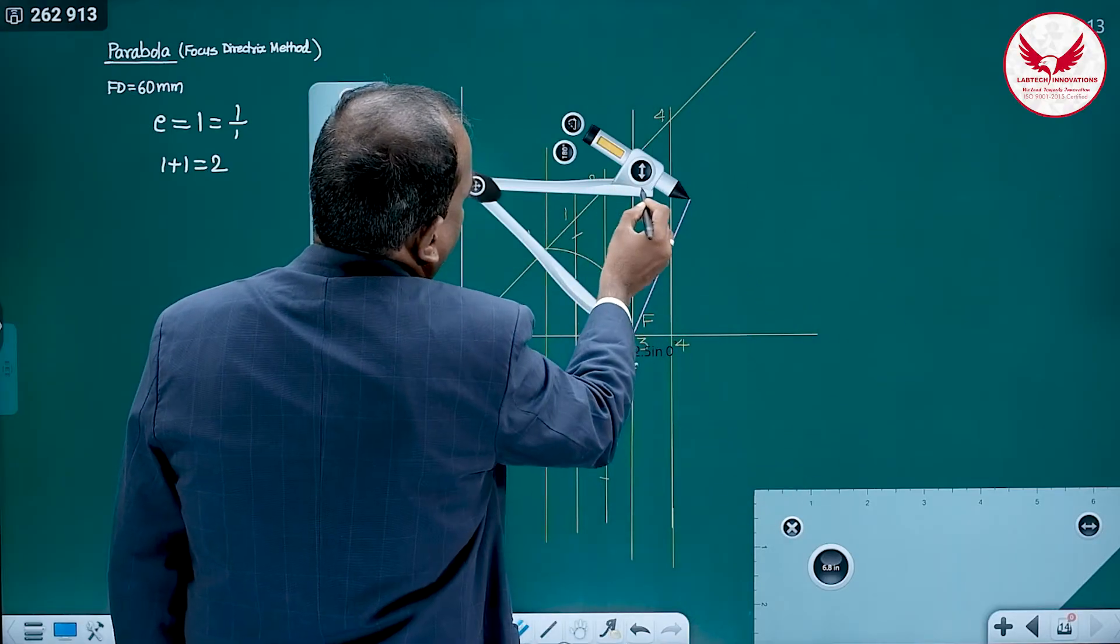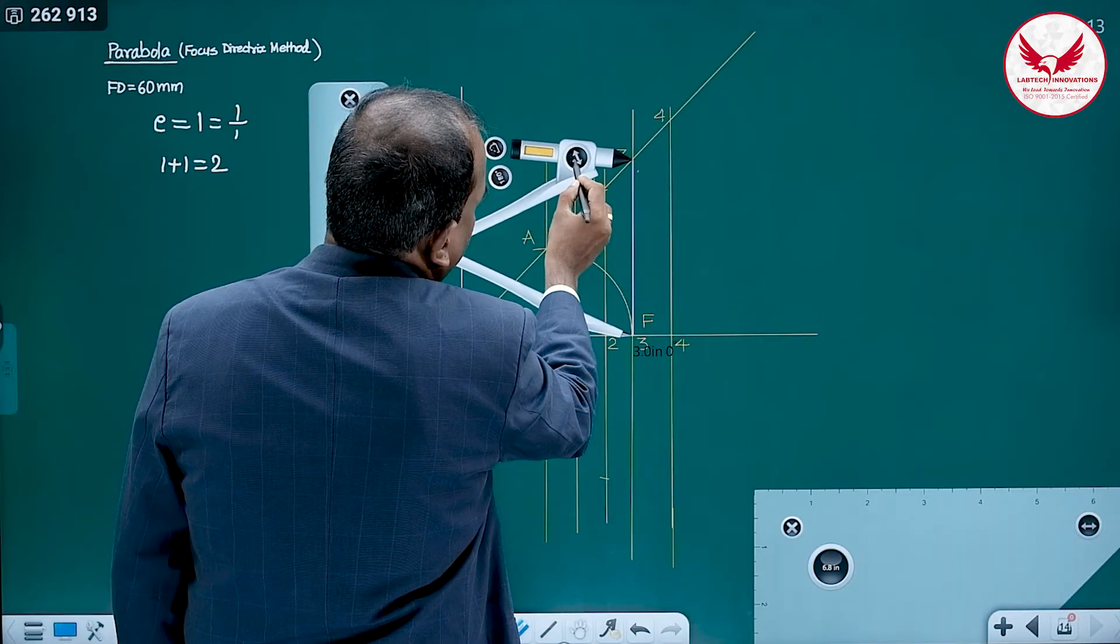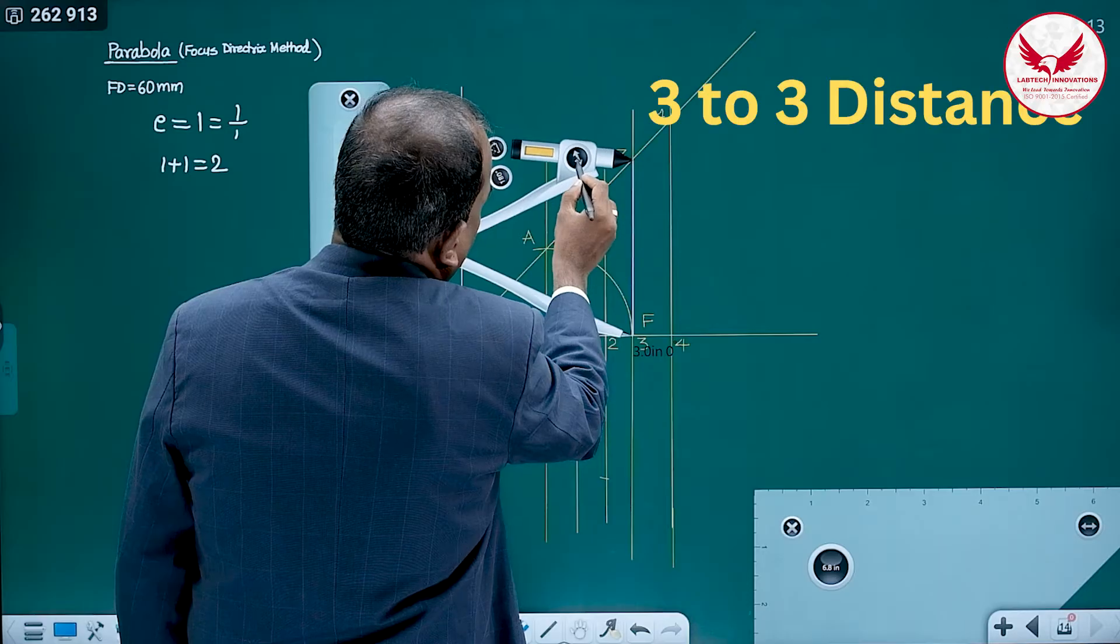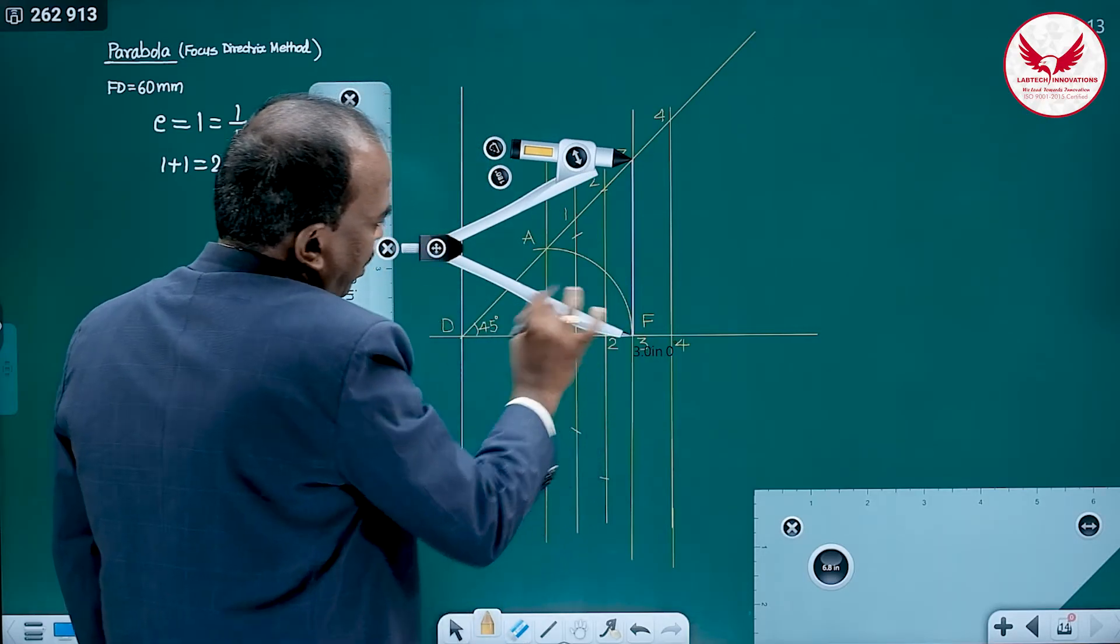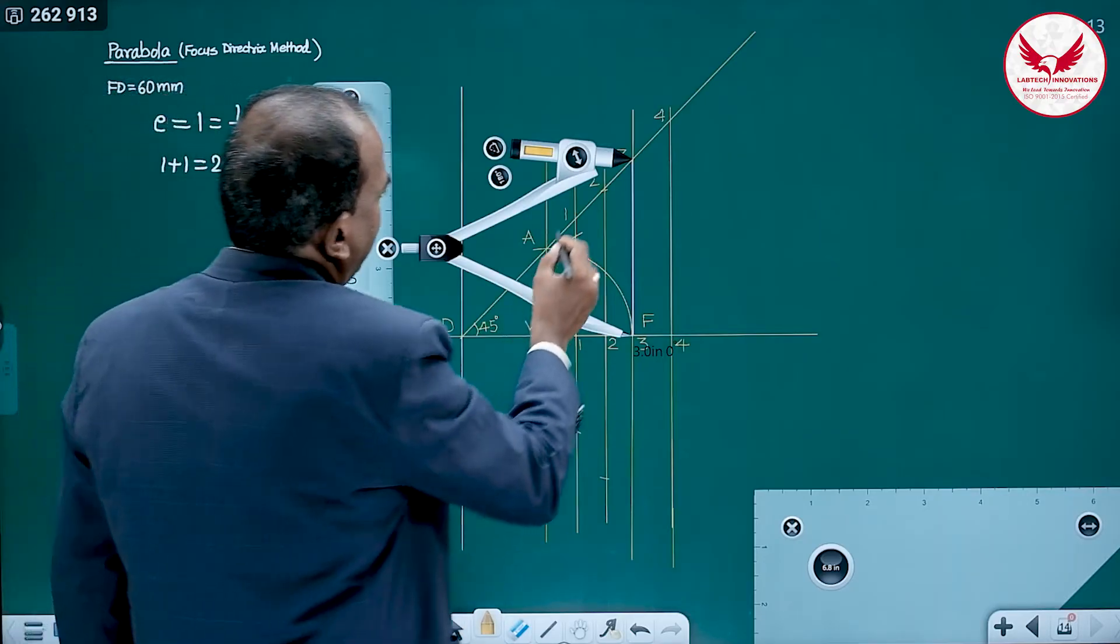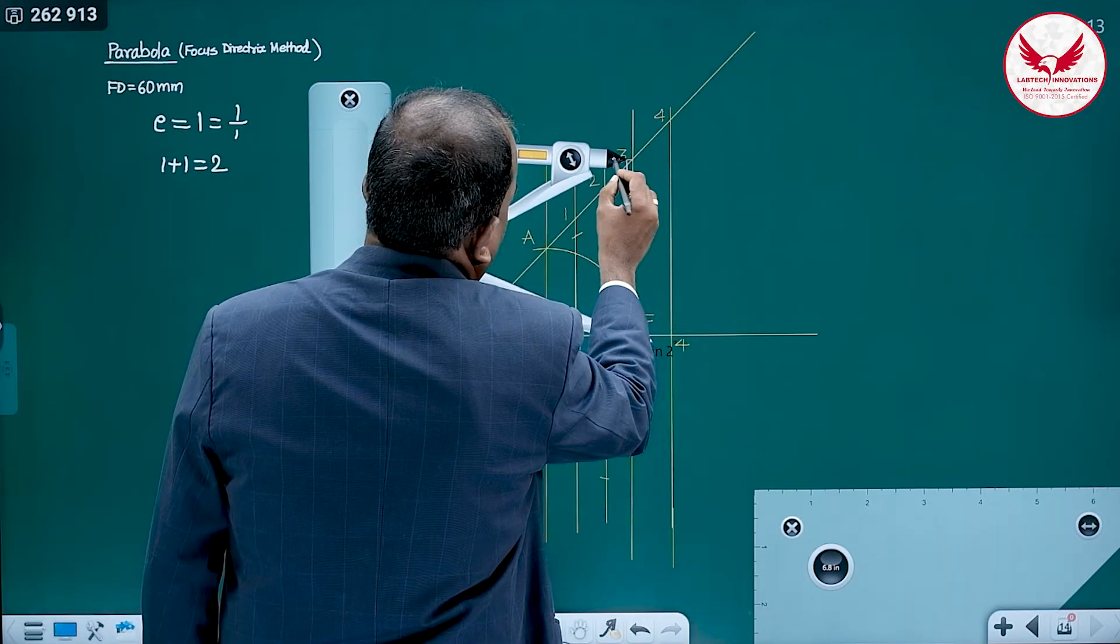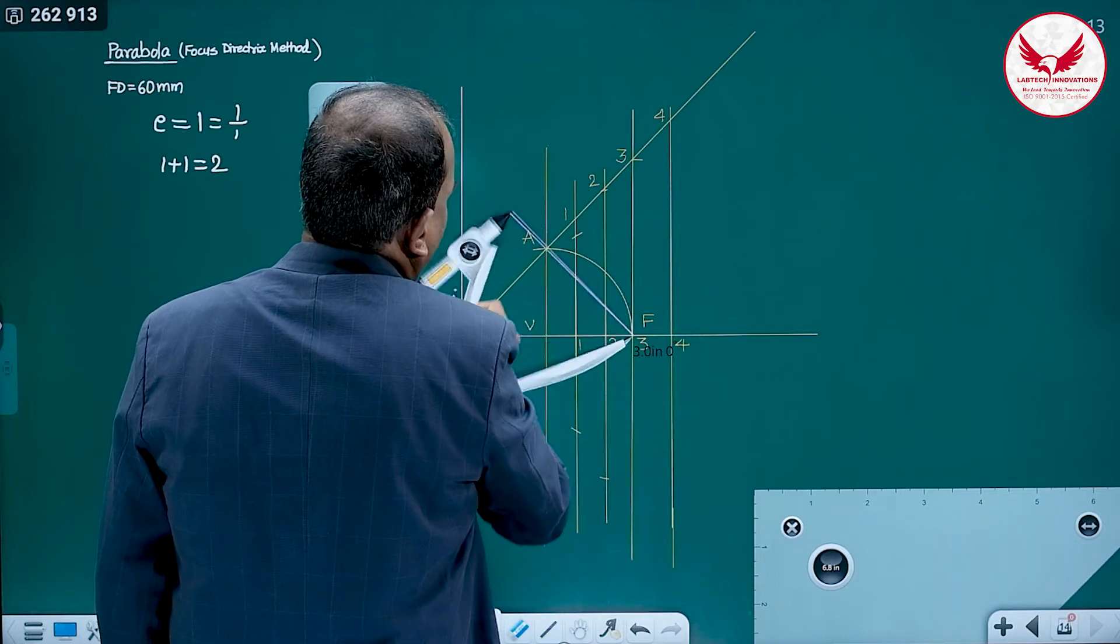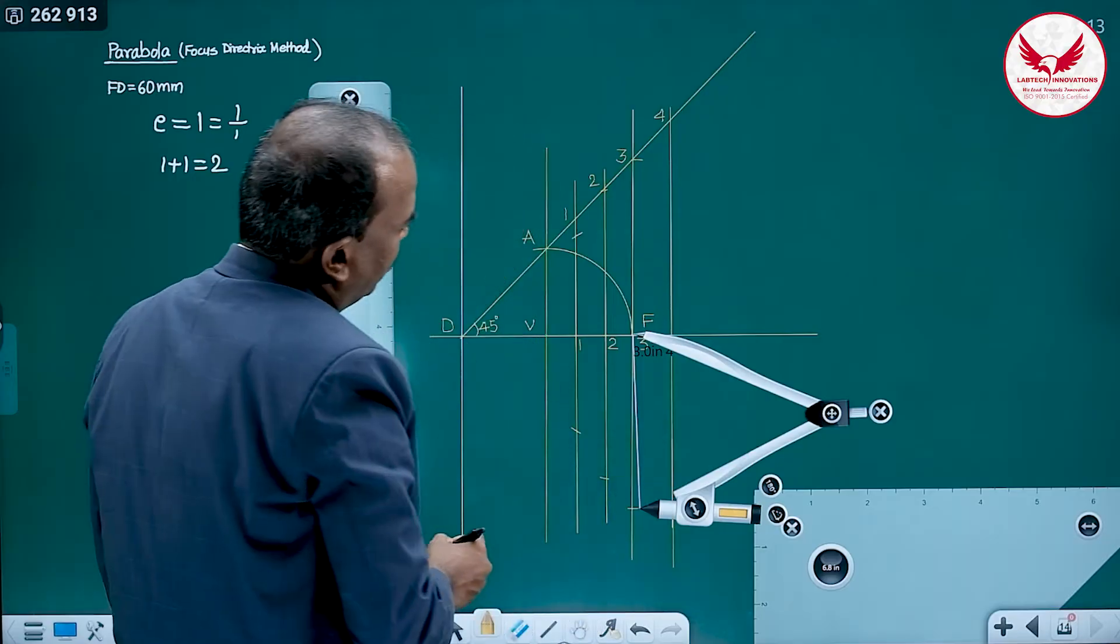2 to 2 distance and shift the compass at 3, which is the focus, that is very important. And again, cut the arc on the same line, 2 to 2. On upper side, at the same time on lower side.